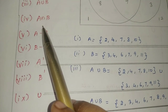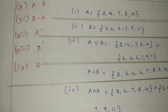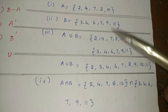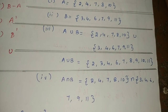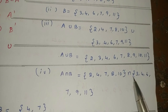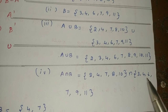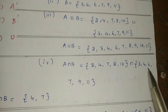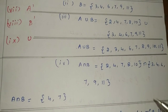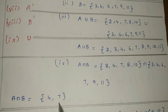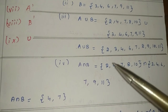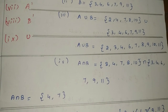Next, we need to do A intersection B. Intersection means common elements. So A intersection B gives us 4 and 7. Union means all elements of A and B, but intersection means only the common elements — 4 and 7.